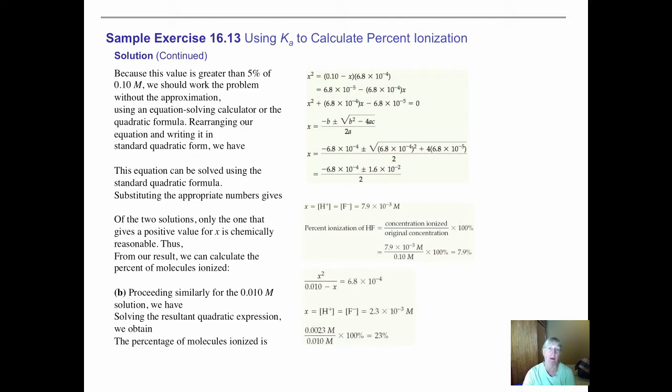Now inside your calculator, hopefully you have the quadratic equation programmed in because you would have your A, your B, and your C values that you enter into the expression. You end up with a quadratic equation with two possible answers. When you get your two possible answers, one of them is a negative number, which doesn't make sense. So the only one that would work for a positive chemical concentration will be the positive value. You can find out then that X would be equal to 7.9 × 10⁻³.